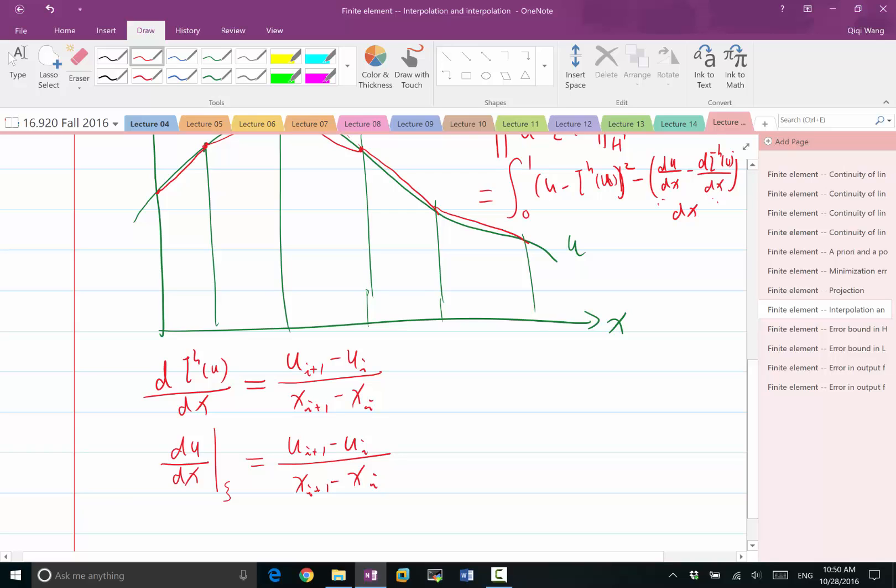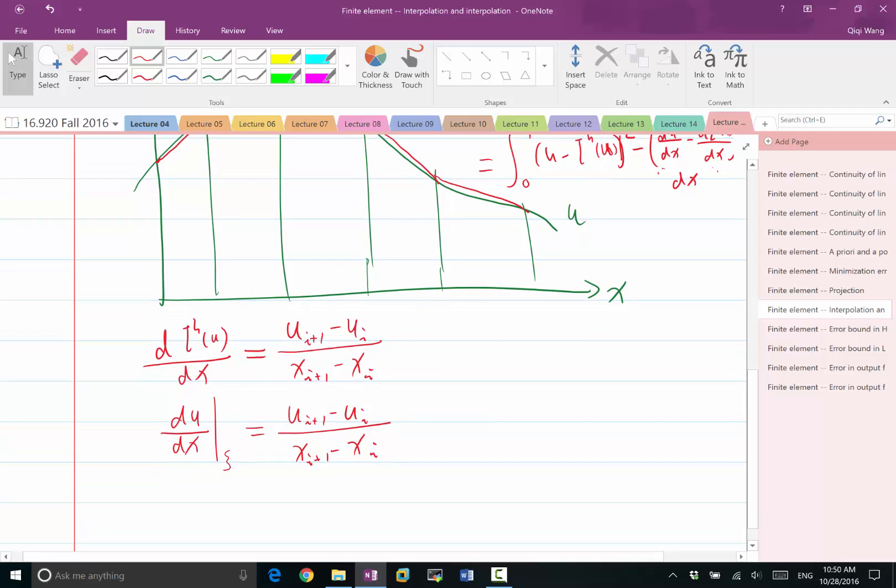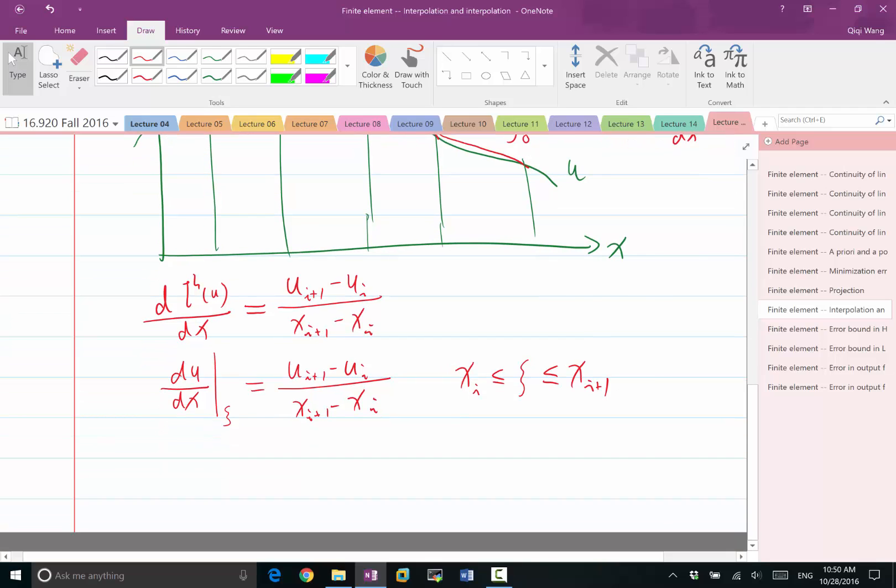The proof is pretty simple. If all the du/dx's are above that value, then you cannot average to this value. If all the du/dx is below that value, you cannot also average to that value. So that means you have to have a certain point du/dx is greater or equal, another point du/dx is less or equal. And because du/dx is a continuous function, you have to have some point where du/dx is exactly equal to this value, where C is somewhere between X I and X I plus 1.